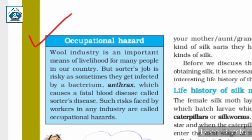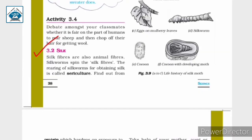Let us now discuss occupational hazards. The wool industry is an important means of livelihood for many people in our country, but the sorter's job is risky as sometimes they get infected by a bacterium called anthrax, which causes a fatal blood disease called sorter's disease. Such risks faced by workers in any industry are called occupational hazards.